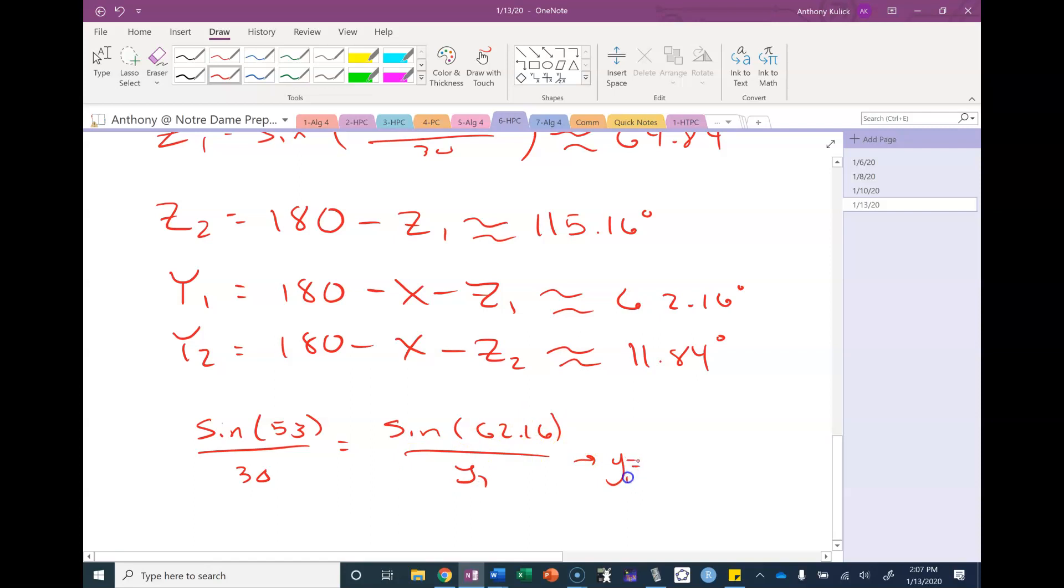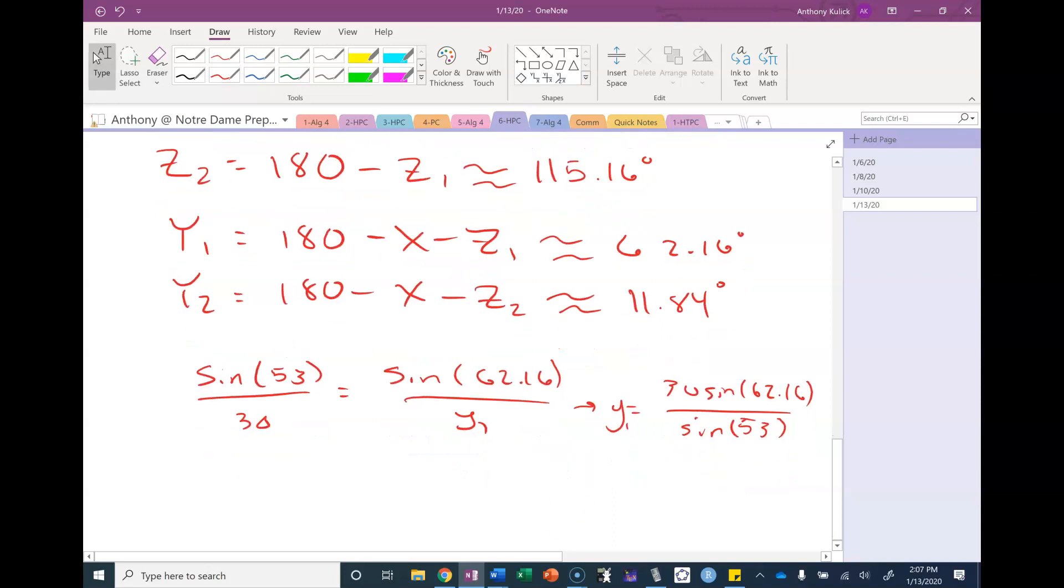So when I cross multiply and divide, I get that. And when I type that into my calculator, I get the 33.22.